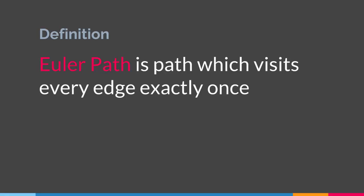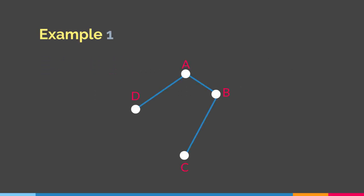What's an Euler path? Well, basically it's a path which visits every edge exactly once. So let's say we have a graph like this. If we can construct a path that visits all the edges of the graph exactly once, then that particular path is an Euler path. So we can have a path that goes from C to B to A to D. We start from here, go to B, go to A, and go to D. In this path we are hitting each edge exactly once. Therefore C, B, A, D is an Euler path for this particular graph.